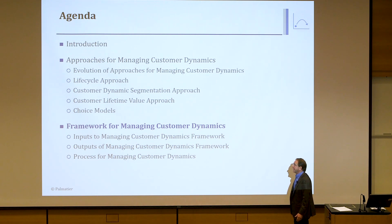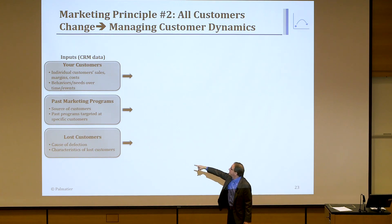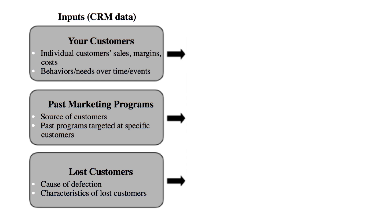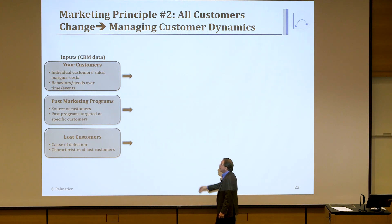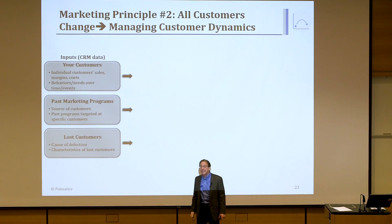Now I'll go through the framework for applying these: inputs, outputs, and process. We have three inputs. A lot of this comes from your CRM data — customer relationship management data — such as Salesforce, Oracle, or Microsoft Dynamics. When we did this for market principle one, we looked at the whole market; now we're focused more narrowly on our own customer portfolio. We look at individual customers' sales, margins, costs, needs, and behaviors. We also look at what programs have worked in the past for acquisition, expansion, and retention, running choice models to understand which programs have the highest elasticity and ROI.